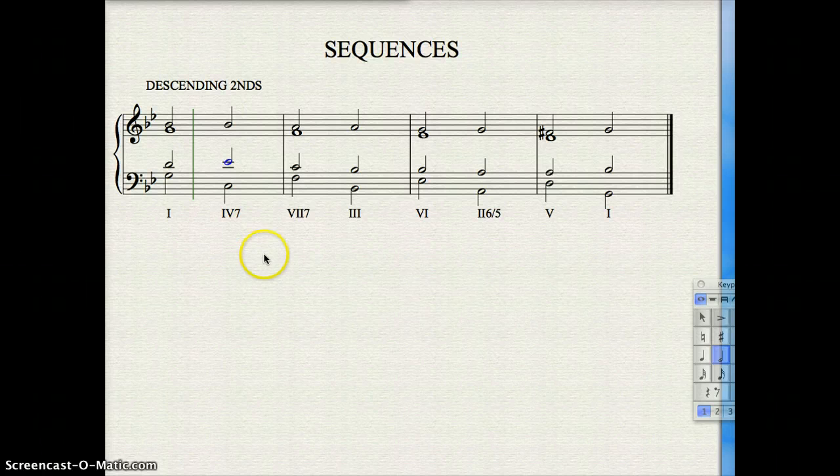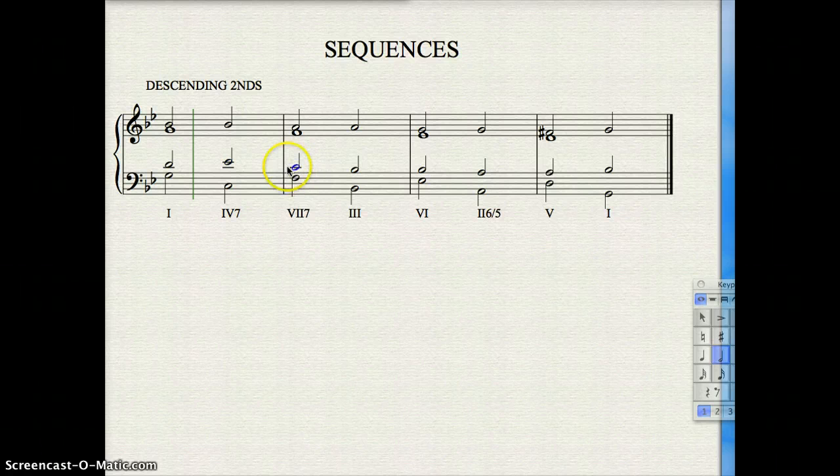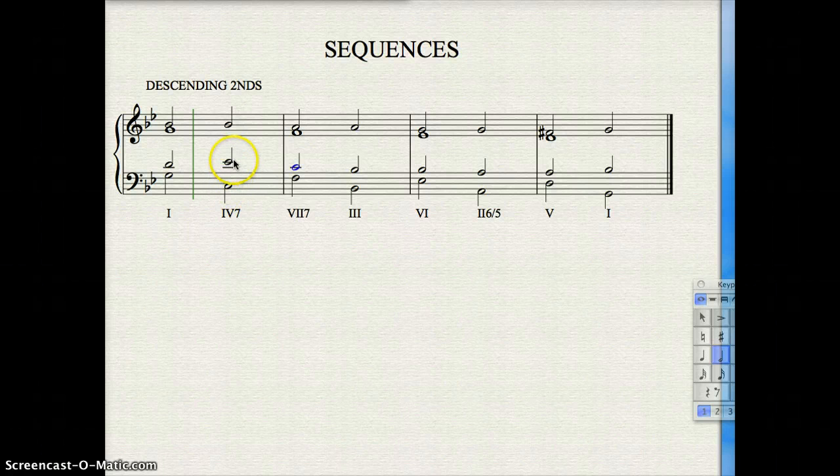We have the 4th 7th, but we need the 3rd. You can omit, in fact, you will have to omit the 5th of every other 7th chord, but you can't omit 3rds. So this 4-7 chord, as you see, is complete. Fa, le, do, and me.